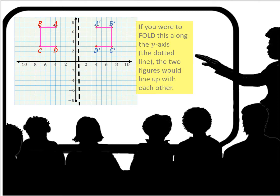We are looking at the reflection of the image on the left across the y-axis. If you were to fold this paper along the y-axis where you see the dotted line, the two figures would actually line up with each other. Point D would be over point D, C over point C, A over A, and B over B. If you fold it in half, they would literally line up with each other.